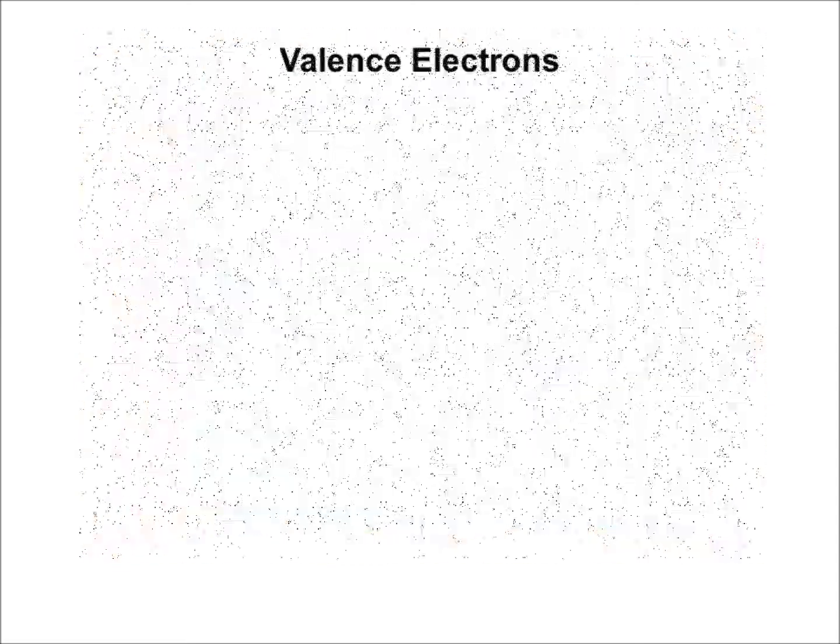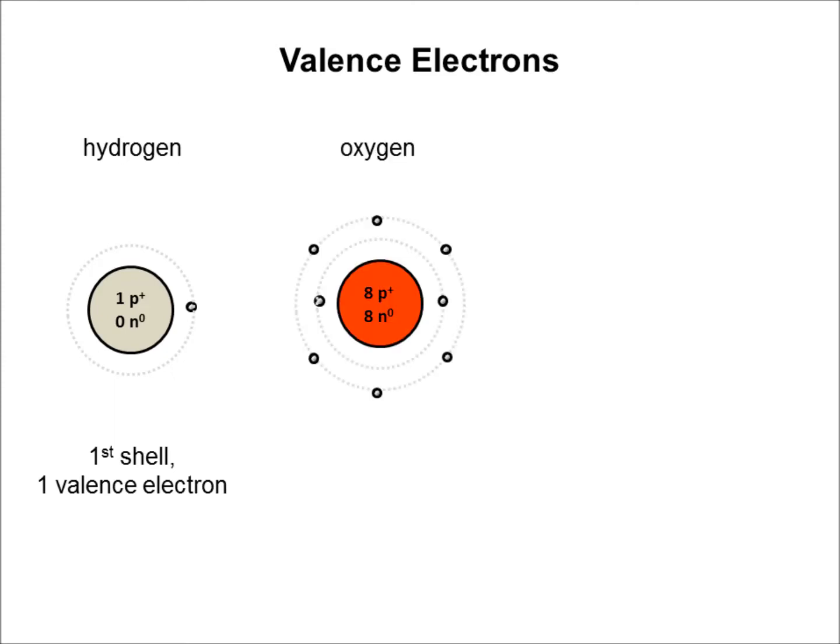If we look at several examples and identify how many valence electrons they have, we can start with the simplest atom, hydrogen, which has one electron in the first shell. So the first shell is the valence shell, and it has one valence electron. Oxygen has eight total electrons, six of them in the second shell, making the second shell the valence shell, and therefore it has six valence electrons.